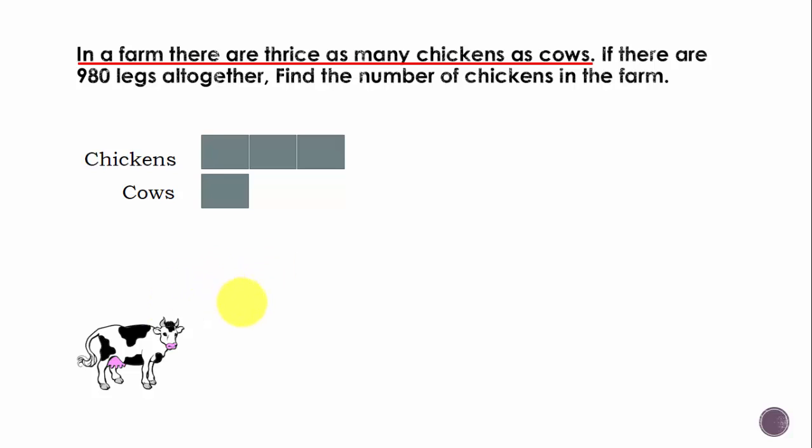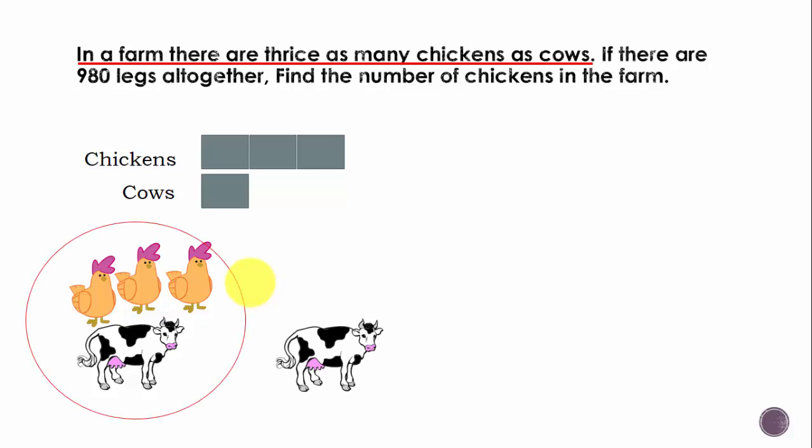If there is one cow, then you will have three chickens and they form a group. And if you have one more cow, then you should have three more chickens, so they form a group.